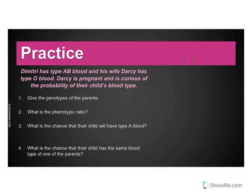For the next problem, I'll help you with the initial setup and then I want you to pause and do it on your own. Dimitri has type AB blood, and his wife Darcy has type O. Darcy is pregnant and is curious about the probability of their child's blood type. Dimitri's genotype is I superscript A, I superscript B, and Darcy's is two lowercase i's. Pause here and set up your Punnett square and solve for questions two, three, and four.